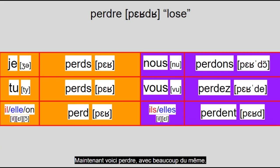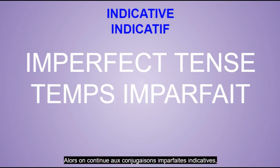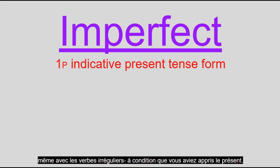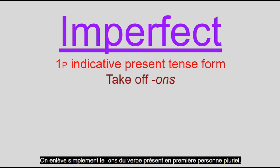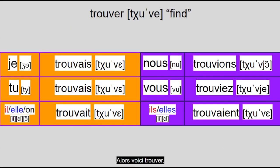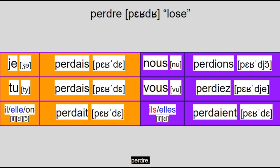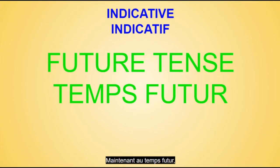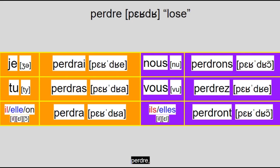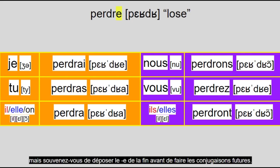Now onto the indicative imperfect conjugations, which are often taught as the easiest conjugations to make, even for irregular verbs, provided you've learned the present. You basically take the -ons off the present tense verb in first-person plural, then attach one of these endings according to the person. So here's trouver, choisir, perdre. Now off to the future tense, which is conjugated off the end of the infinitive rather than the root. Here's trouver, choisir, perdre — but remember to drop the E off the end before doing the future conjugations.